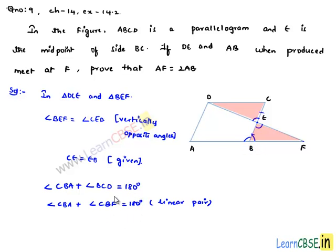Here in these both equations, we can observe the right hand side is common, so we can equate the left hand side. That is, angle CBA plus angle BCD is equal to angle CBA plus angle CBF. On both sides we get angle CBA cancelled, so we are left with angle BCD is equal to angle CBF.